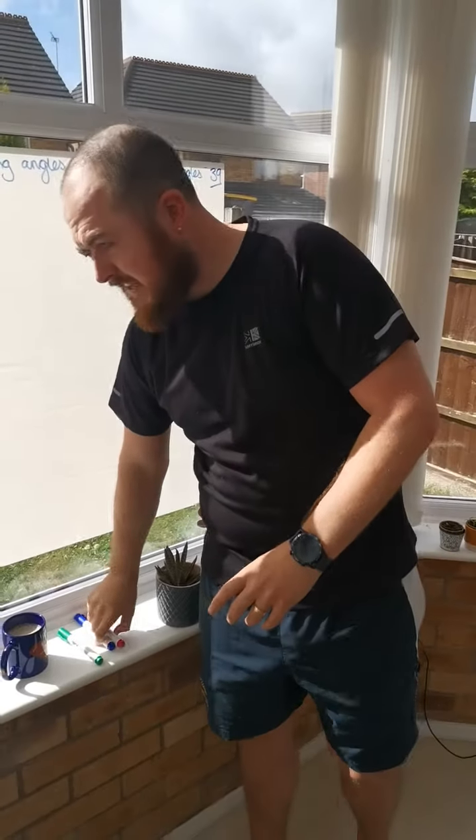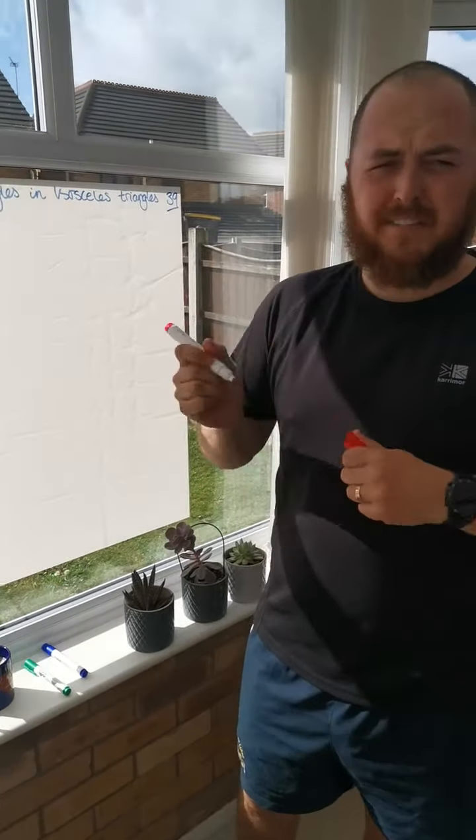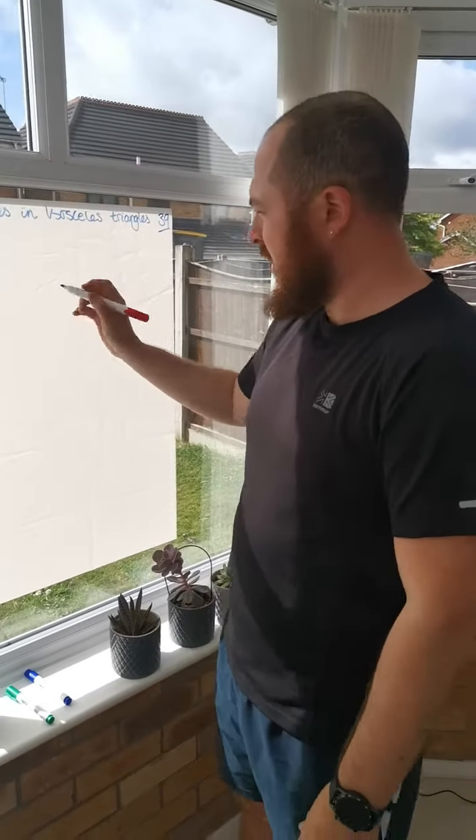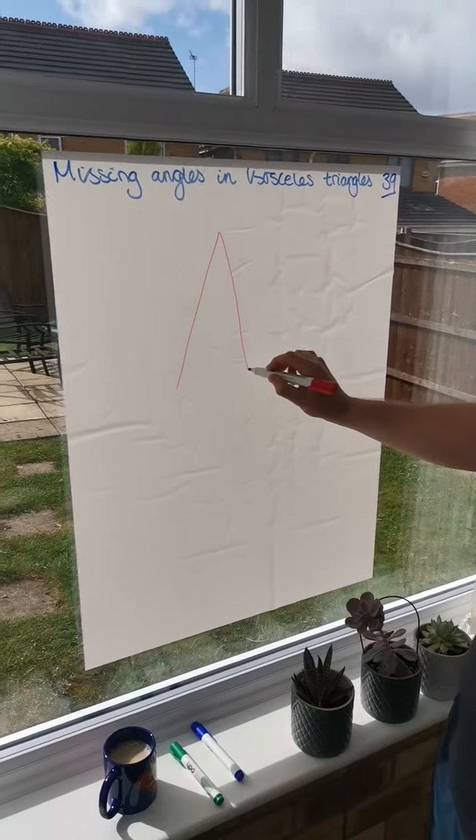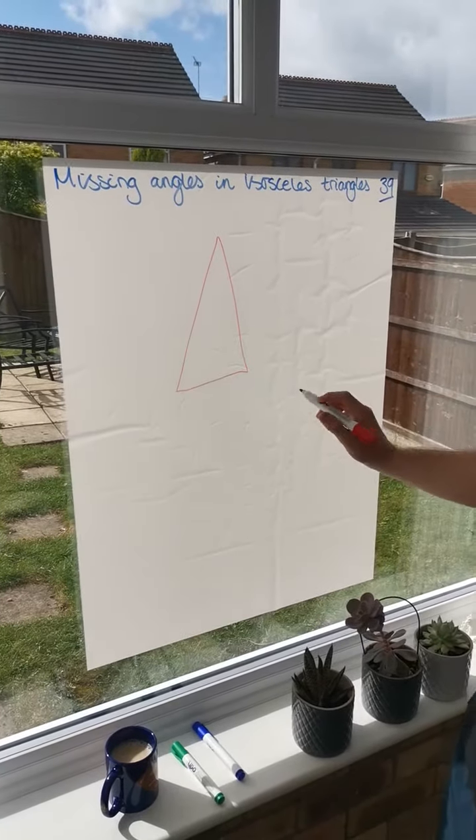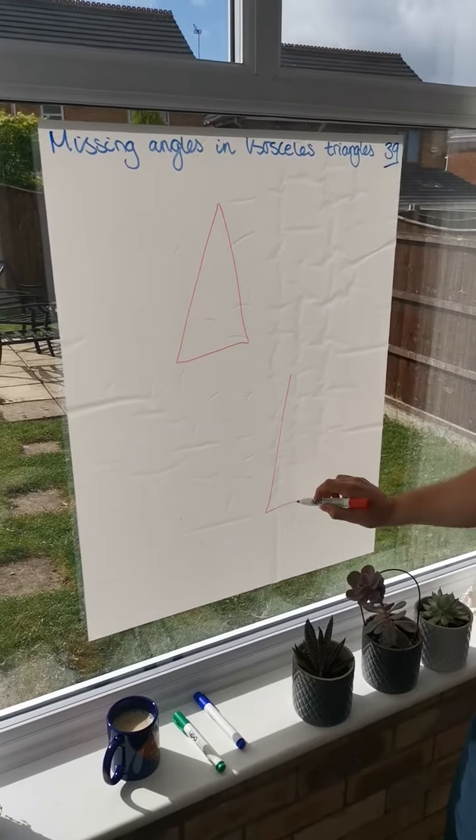Same as yesterday, you'll be given an angle already inside your triangle. Now, remember, the isosceles triangle is a bit of a strange one. And we're going to do two examples.